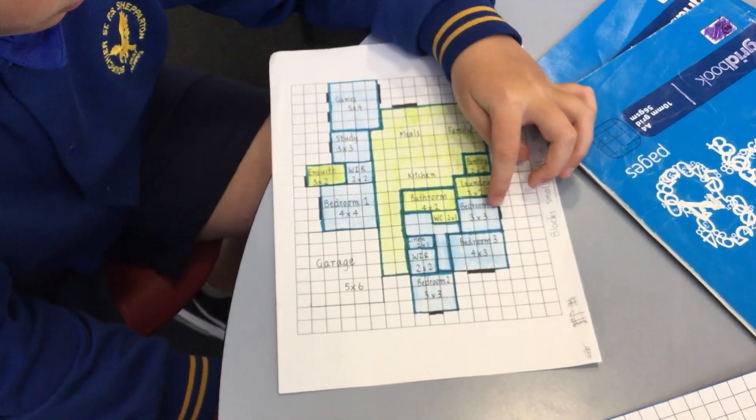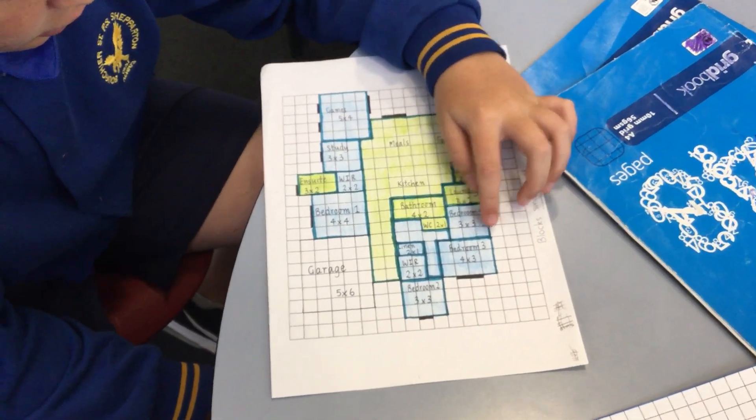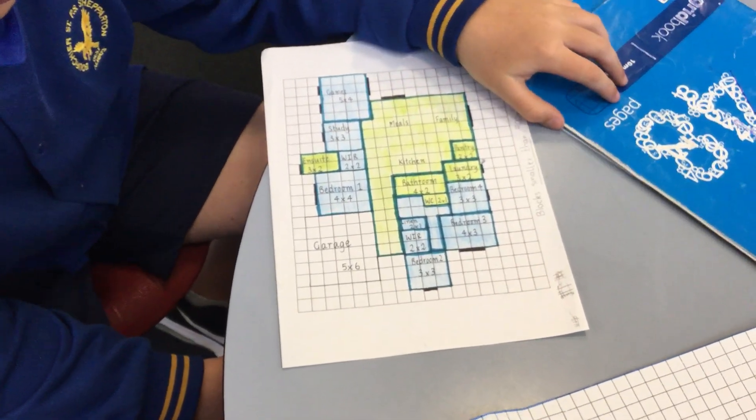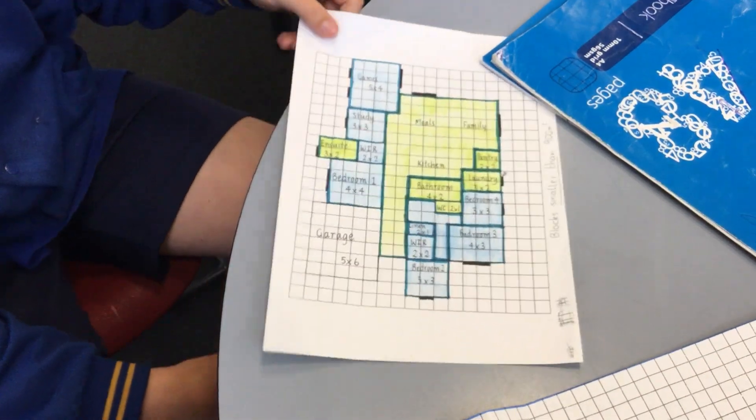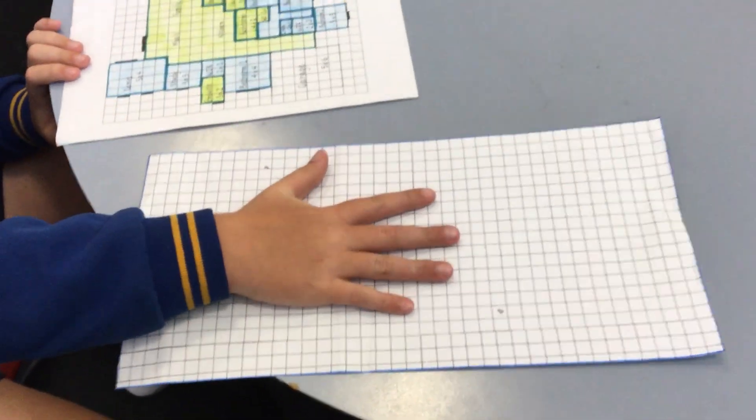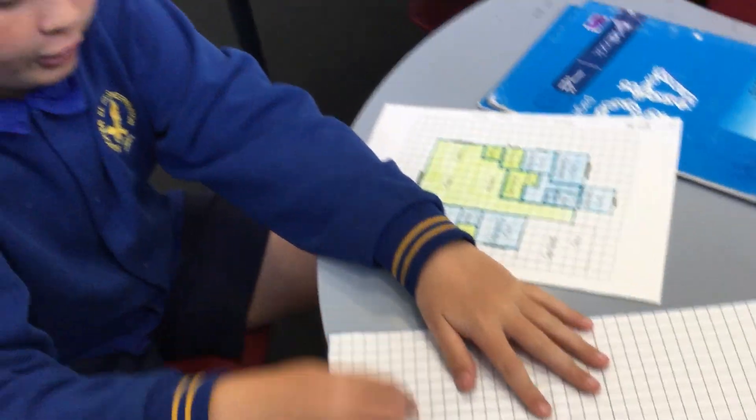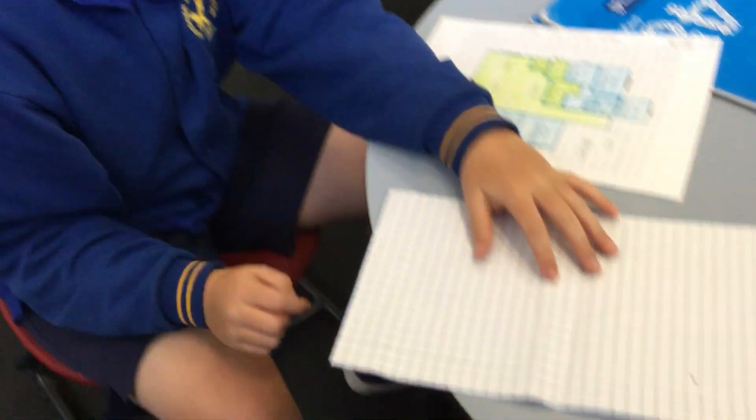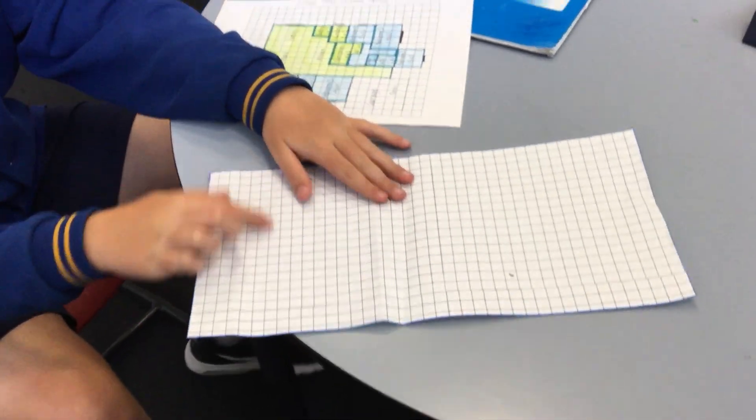There's the pantry, laundry, bathroom, bedroom four. It's a four-bedroom house, and I'm happy with what I've done with it. This is my block of land. When I cut it out, I'm going to stick it on, and then I'm going to draw in my pool if I want a pool, or like a little soccer field.